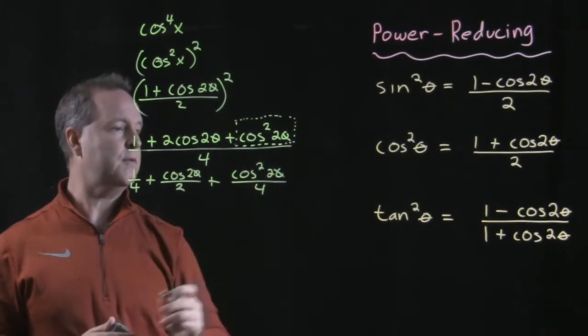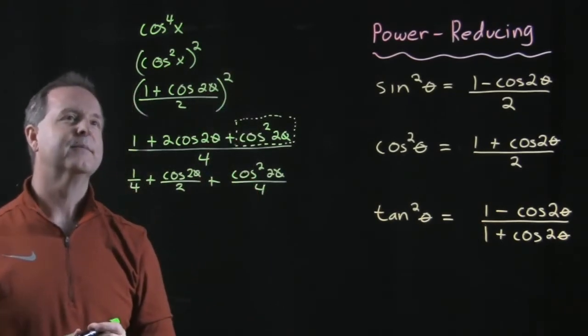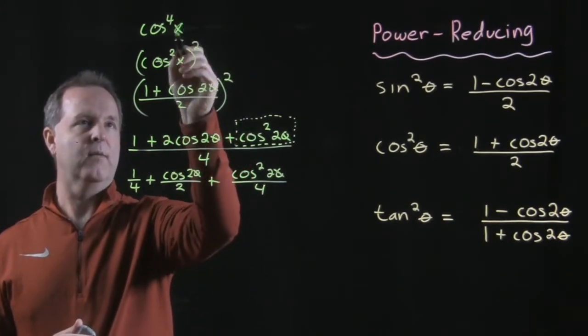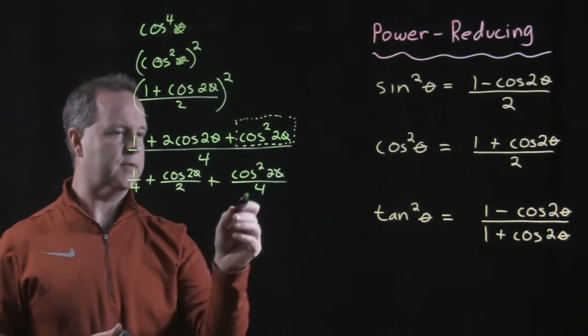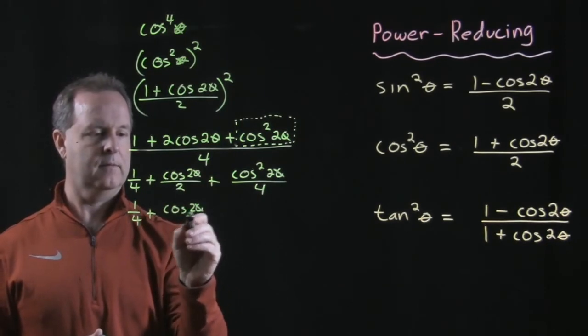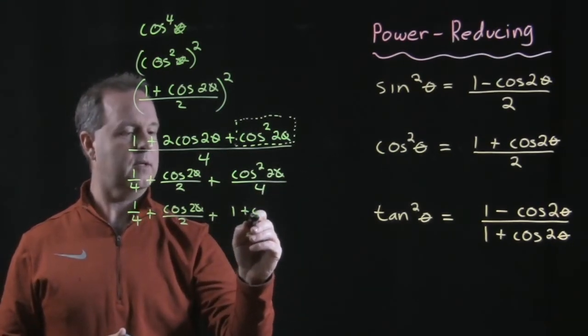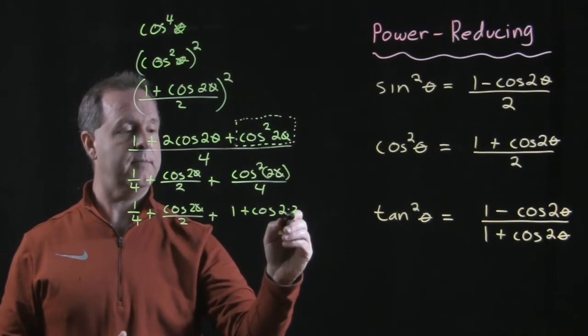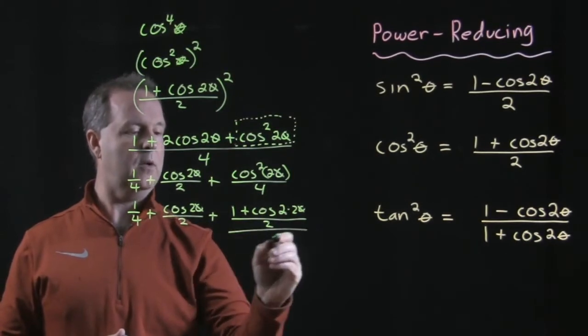Cosine squared of 2 theta I can use this idea again where, oh, I guess I changed from x's to thetas in this process didn't I? Sorry about that guys. Let's just pretend that it's the same variable so let's go ahead and start with theta then. So I'll just go ahead and rewrite those as thetas, just a variable, changed variables. Cosine squared of theta, so I still have the 1 fourth. Cosine squared of theta becomes a 1 plus a cosine of 2 times my theta. My theta in this case is a 2 theta. So it's 2 times a 2 theta all over a 4, oh sorry, all over a 2, all over a 4.